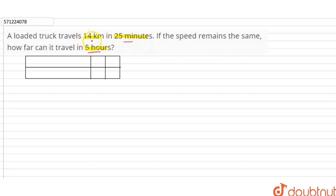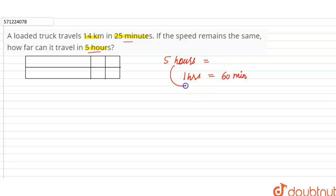In the first part, 14 kilometers can be covered in 25 minutes. We have to convert five hours into minutes. One hour is equal to 60 minutes, so five hours will be equal to five into 60, that is equal to 300 minutes. So we have to find the distance that can be covered in 300 minutes.